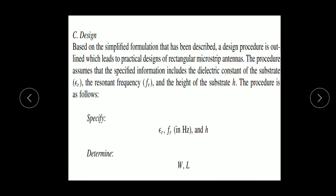What is the procedure? For designing any antenna, the given parameters are: the dielectric constant of the substrate material — the substrate material may be Rogers material, FR4 material, or any type of material we can use for designing the antenna — the frequency at which we have to design the antenna, and the height of the substrate material.